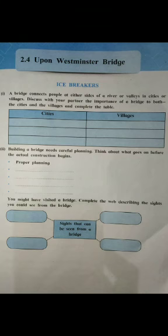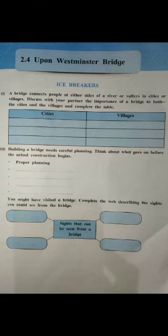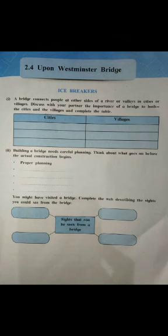Students, first of all, we will learn about icebreakers in the poem. A bridge connects people at either side of a river, in cities or villages. You have to discuss with your partner the importance of bridges to both cities and villages and complete the table. In the city, bridges connect all the important areas, while in the village, bridges connect villages to the main roadways and across difficult mountain terrain or rivers. Bridges can interconnect villages and connect villages to the city highways.